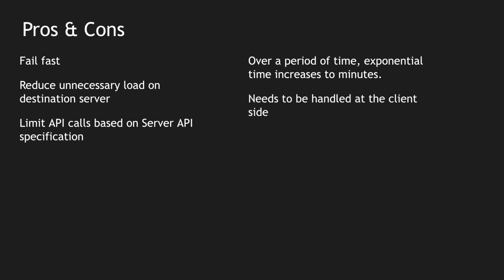Another con is that exponential back-off must be handled on the client side — the server side cannot implement it alone. Most of the time, clients don't add these validations. For example, in Zerodha's case, the mobile app can be designed with exponential back-off built in, but if users are calling APIs directly, the client must implement it themselves. This is why rate limiting on the server side is still needed to reduce failures and interactions.